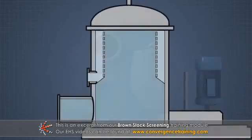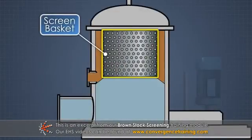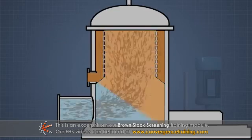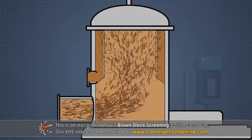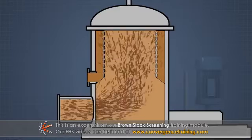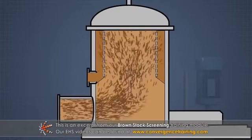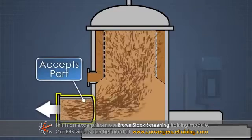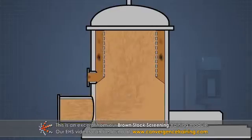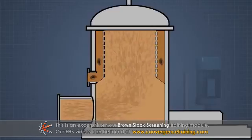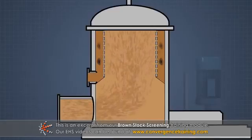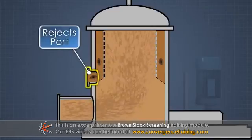The stock flows down along the outside of the screen basket. Small accepted fibers pass in through the basket and flow to the bottom of the screen and out of the ACCEPTS port. The particles which do not pass through the screen work their way down the outside of the basket and flow out the REJECTS port.